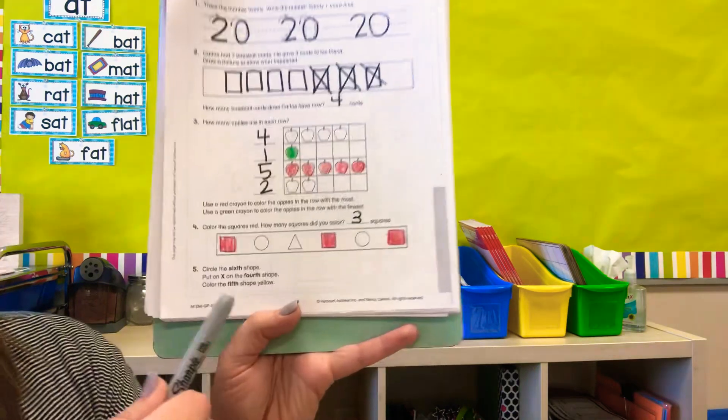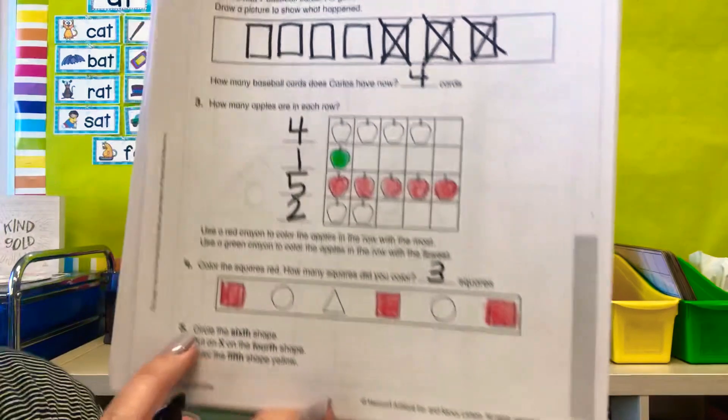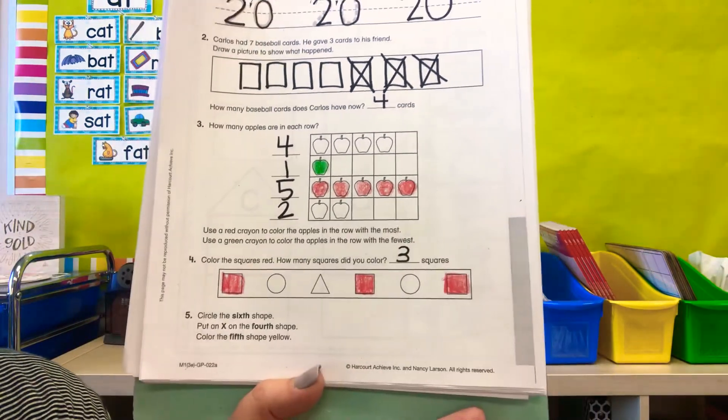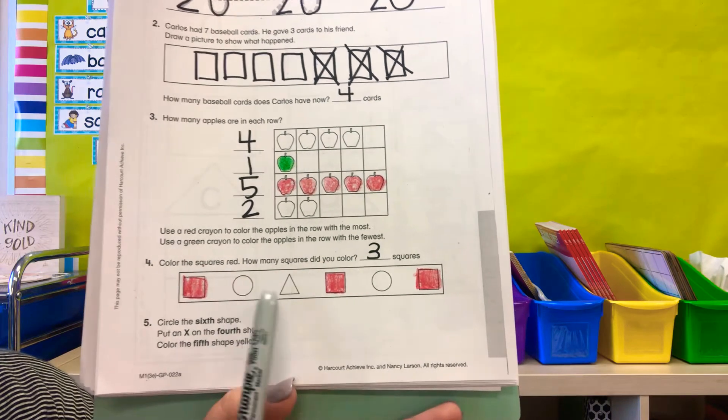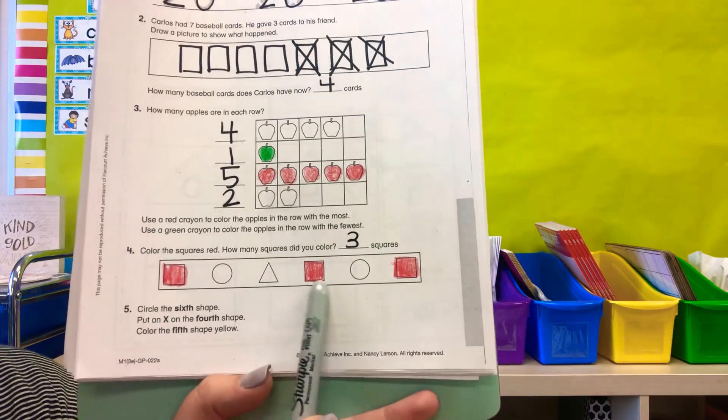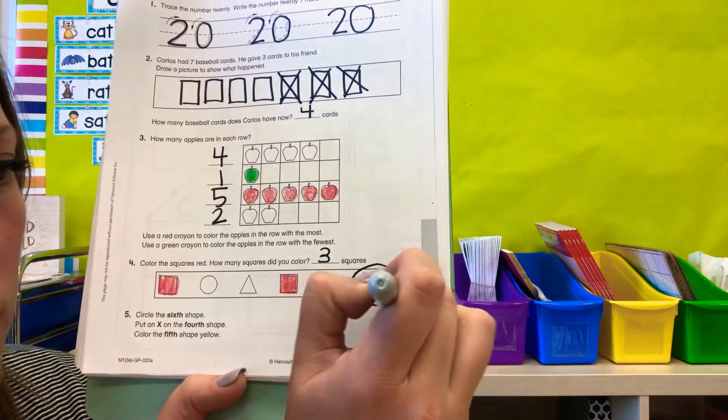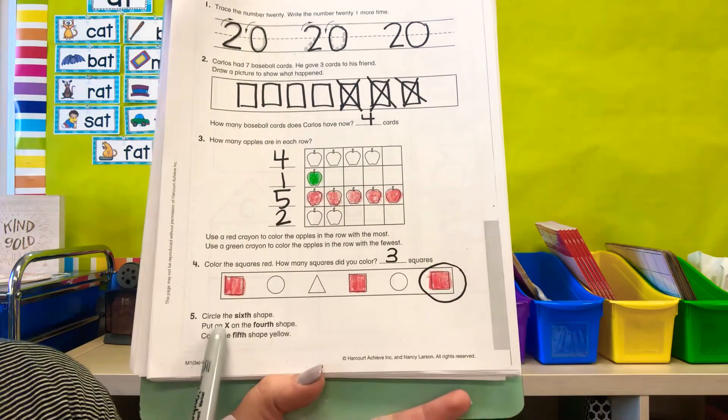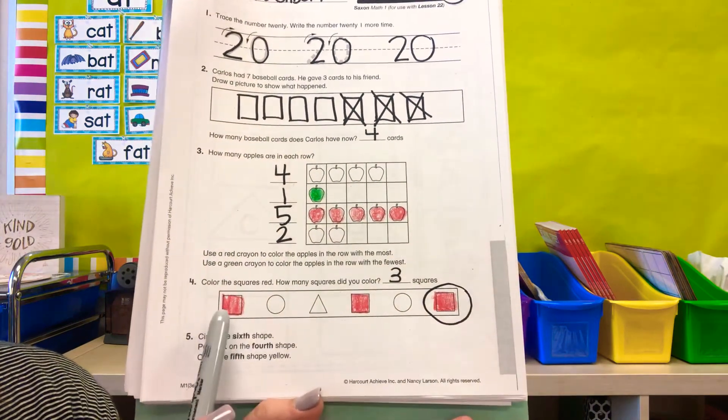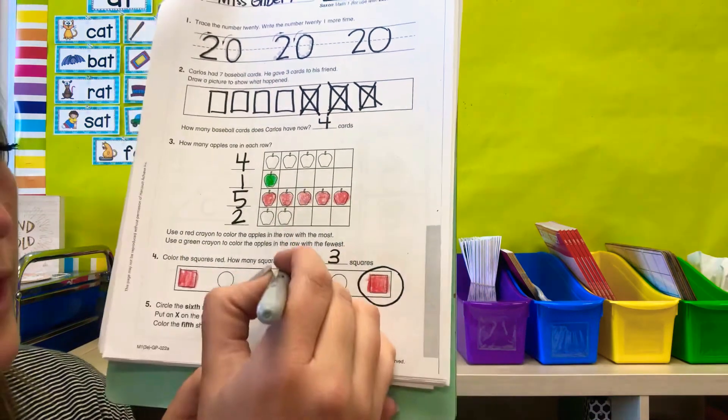It says here, this is an instruction. So we're working on following the instructions. Okay. It says, circle the sixth shape. Listen to this. First, second, third, fourth, fifth, sixth. Circle the sixth shape. Very good. Very good. Put an X on the fourth shape. First, second, third, fourth. We're going to X that one out.